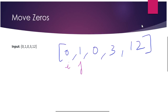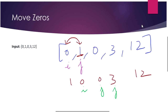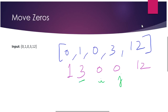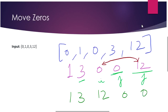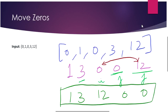Every time j encounters an element greater than 0, we swap it with the current position of i. So 1 is greater than 0 — swap happens, array becomes 1, 0, 0, 3, 12. Now i is at 0 and j moves to the next 0, which is not greater than 0, so we move ahead. Next is 3, which is greater than 0 — swap with position of i, pushing 3 to the second position. Finally, 12 is greater than 0, so it swaps, giving us the final array 1, 3, 12, 0, 0 — all zeros moved to the end and positive numbers at the start, preserving relative order.